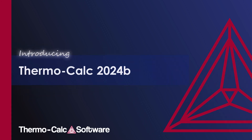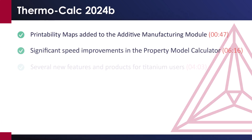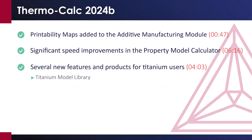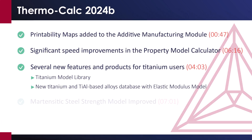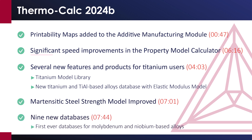Introducing Thermo-Calc 2024B, released in June 2024. This release introduces printability maps in the additive manufacturing module, and significant speed improvements in the property model calculator.